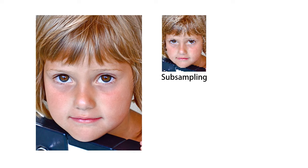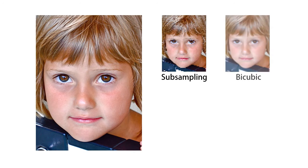The standard method for downscaling is pre-filtering the input image to average colors in a neighborhood and setting these averaged values as the colors of the downscaled image. This eliminates the artifacts but also washes out features and details of the original image.